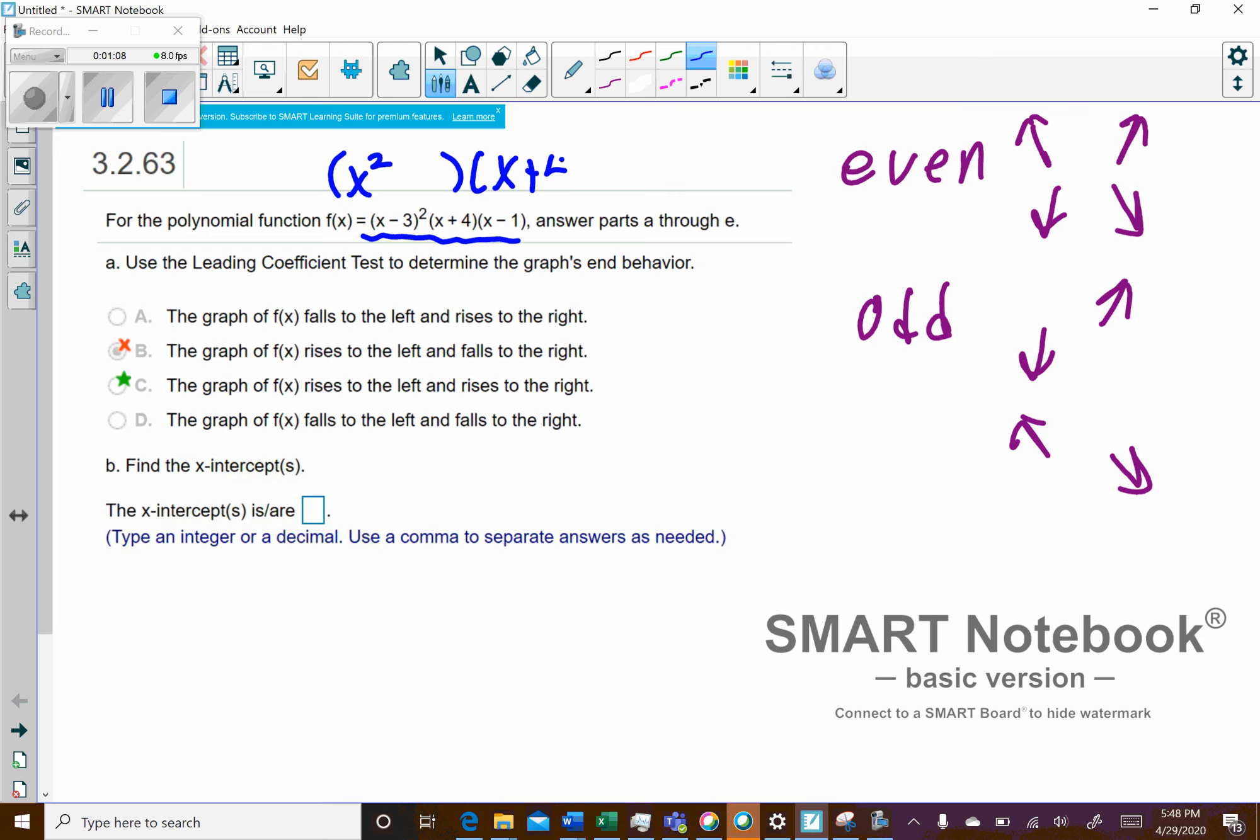And then you have your x plus 4, and then you have your x minus 1. And the plus 4 and minus 1 actually really don't matter in this case. When you start to multiply this stuff together, the leading coefficient would end up being x to the power of 4, and it has an understood power of 1 in front.